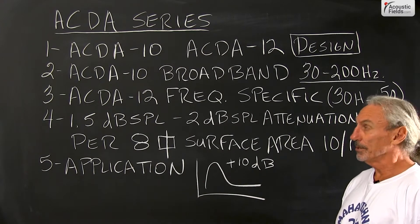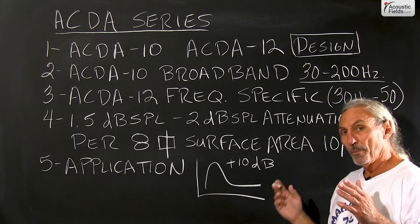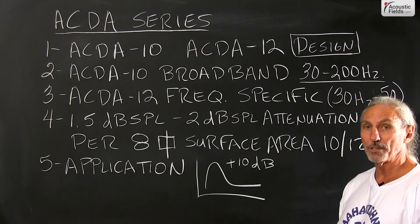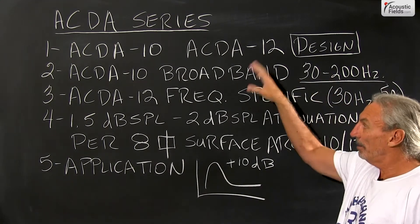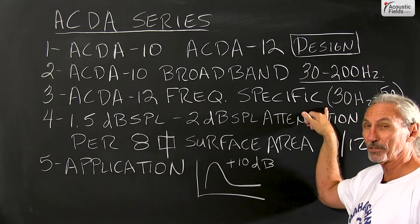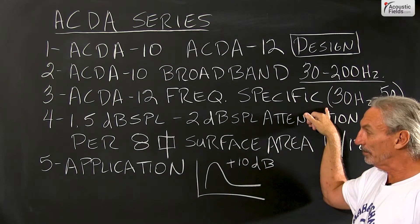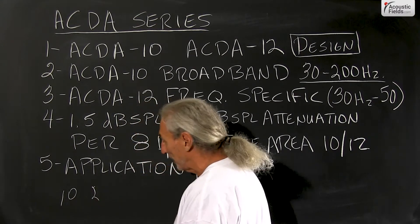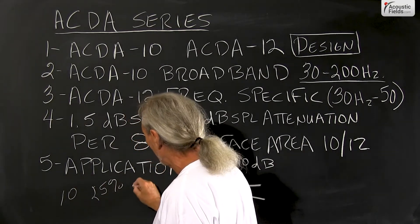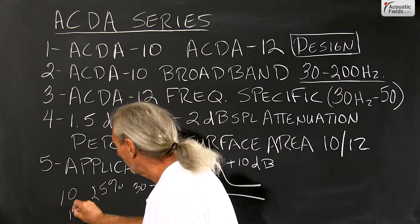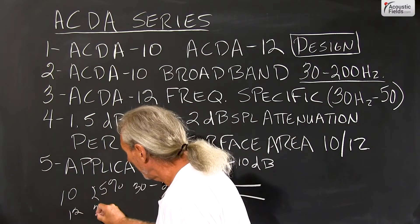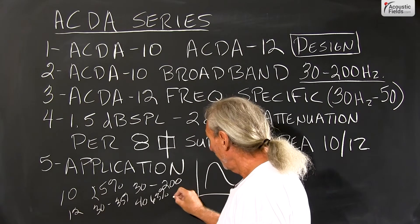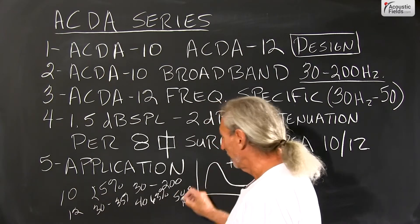That became the impetus for the ACDA-10 and the ACDA-12. We manufacture them at the same depth, but inside each unit the 12 is a little bit deeper than the 10, with some other internal changes. The 10 is broadband at about a 25% average absorption coefficient from 30 to 200 Hz. The 12 is really powerful — about 35% average, and at 40 Hz we're at 63% on sample size, and at 50 Hz we're at 100% absorption.